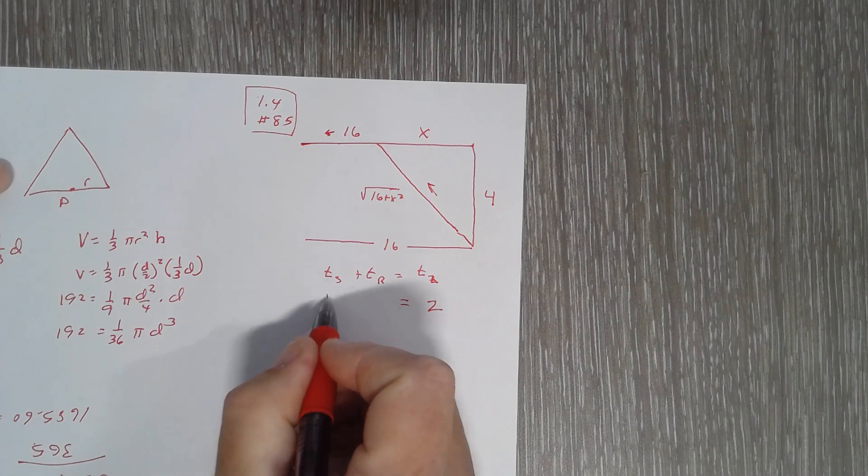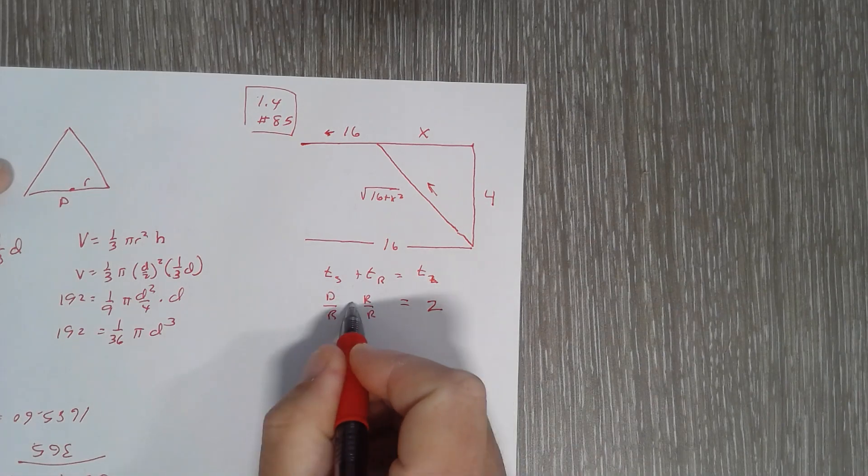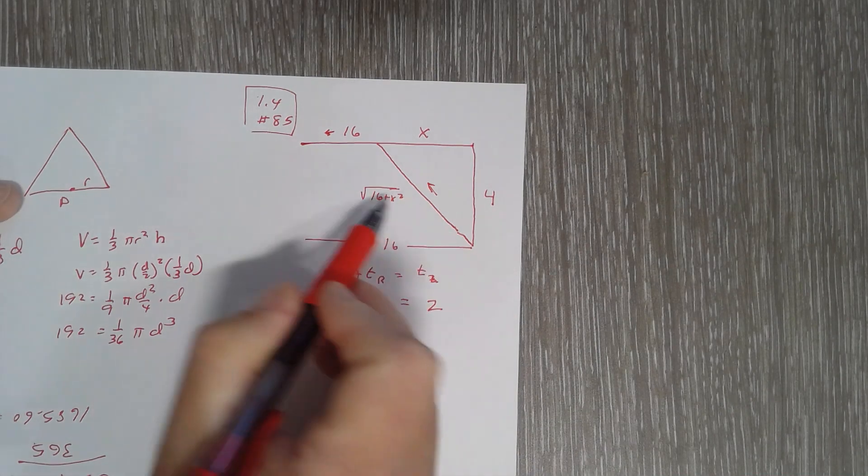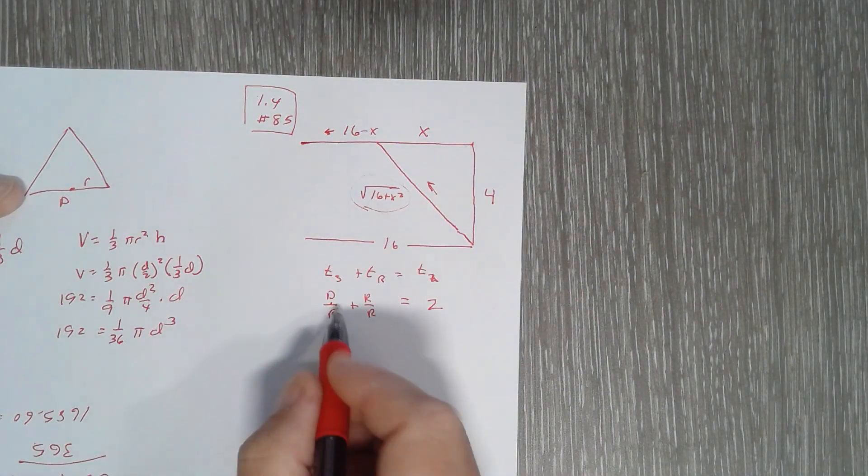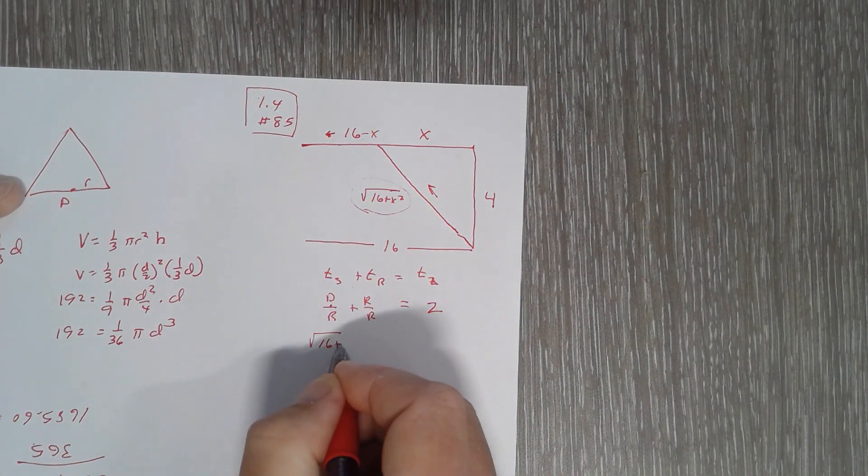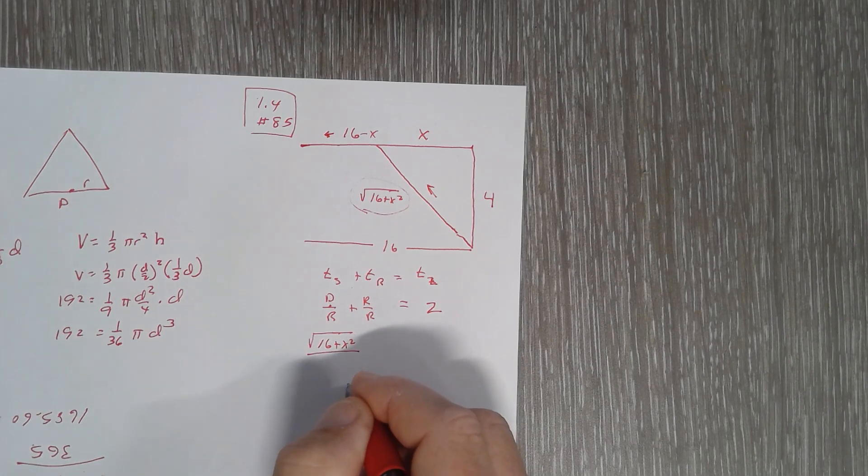Each time is the distance over the rate, so the distance that we're going is what they gave us right here. Our distance swimming is square root of 16 plus x squared over my rate swimming, which is 7 kilometers an hour.